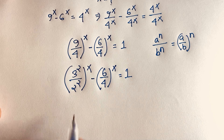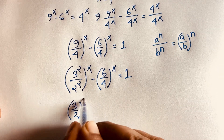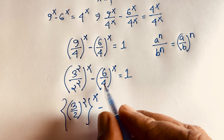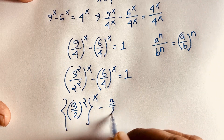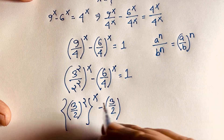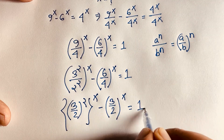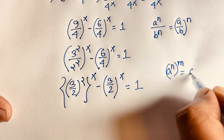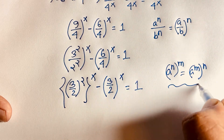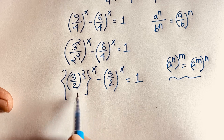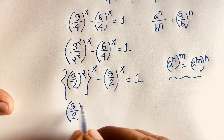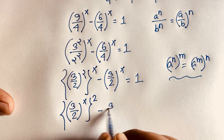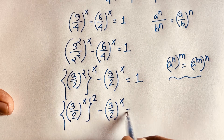We can see that (3/2)^(2x) can be written as ((3/2)^x)^2, using the rule (a^m)^n = a^(mn). And (6/4) simplifies to (3/2), so the equation becomes (3/2)^x whole squared minus (3/2)^x is equal to 1.